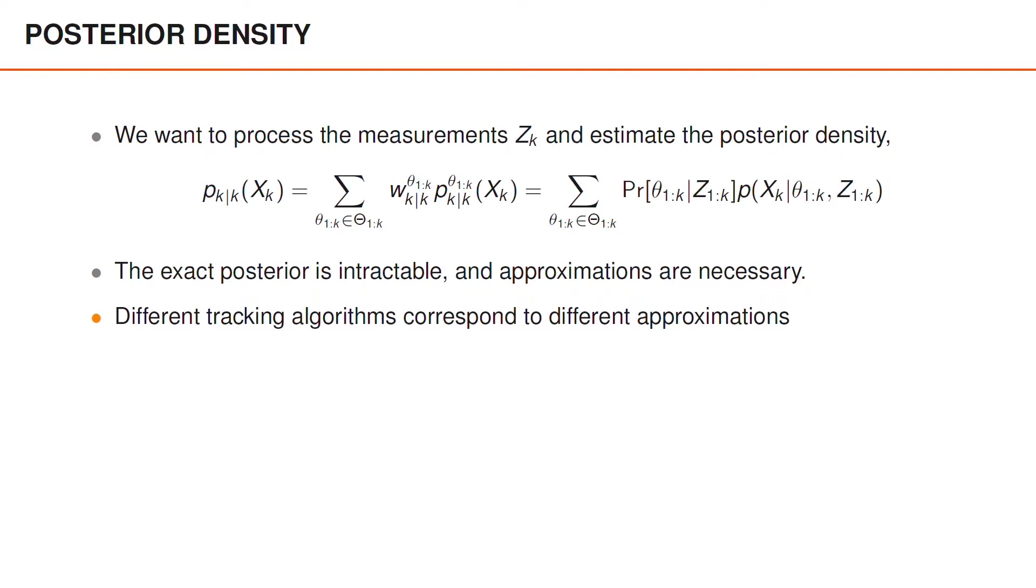So different tracking algorithms correspond to different approximations of the posterior density. And the methods for dealing with a large number of hypotheses can be divided into two main categories called pruning and merging.